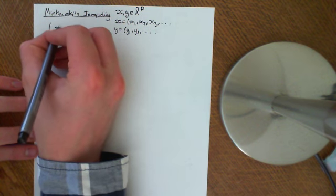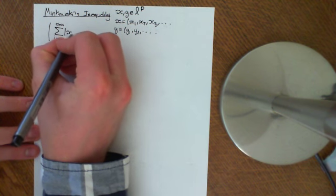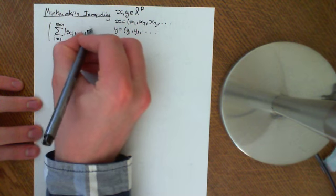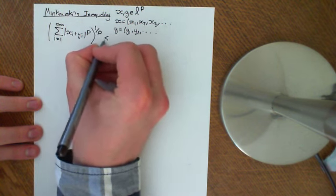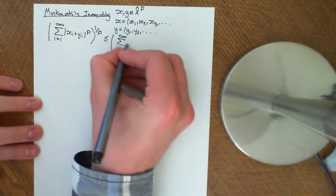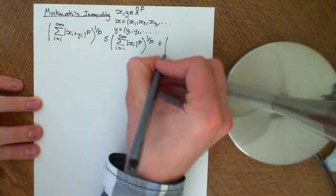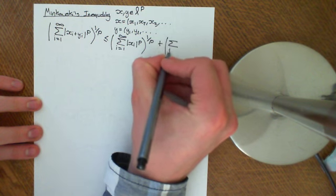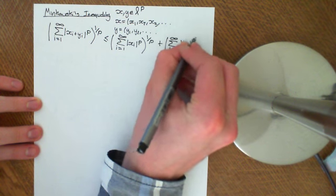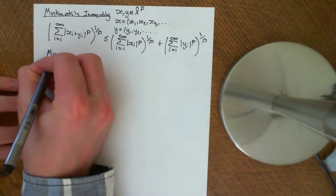Minkowski's inequality states that the sum from i equals 1 to infinity of |xi + yi|^p, to the power of 1/p, is less than or equal to the sum from i equals 1 to infinity of |xi|^p to the power of 1/p, plus the sum from i equals 1 to infinity of |yi|^p to the power of 1/p. This great big inequality is Minkowski's inequality.